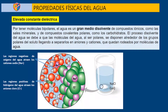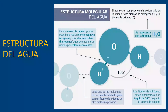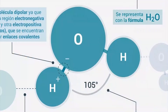Empezamos con la elevada constante dieléctrica. 'Elevada' significa alto, y 'dieléctrica' significa que tiene dos cargas eléctricas. El agua, como hemos visto anteriormente, tiene dos condiciones eléctricas: negativa y positiva. Por lo tanto, el agua es dieléctrica.